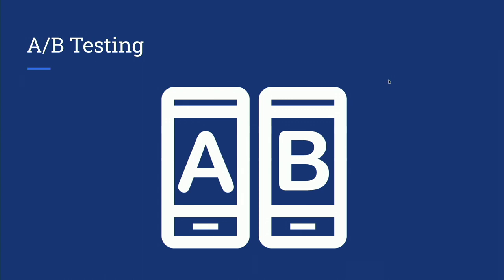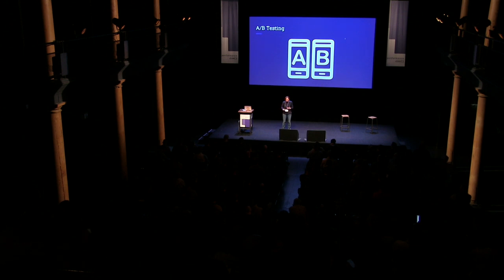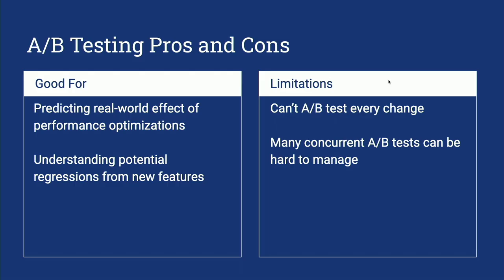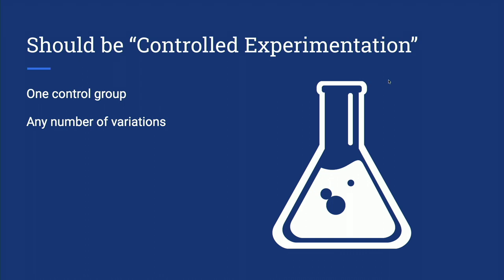Next, we have lab testing that gives us initial data and protects us from regressions, but the biggest thing we do to both prevent regressions and test performance improvements is A/B testing. When we do A/B testing on web properties at Google, we always do server-side so we can really not have that performance impact and better understand performance changes. A/B tests are really great for actually predicting the real-world effect of performance optimizations — you can see how a random sample of users is affected, and if you launch new features through A/B tests you can be sure they're not going to regress your key performance metrics. The biggest limitation is just that it's hard to A/B test every single change, and if you start moving in that direction it's hard to manage all of the tests.